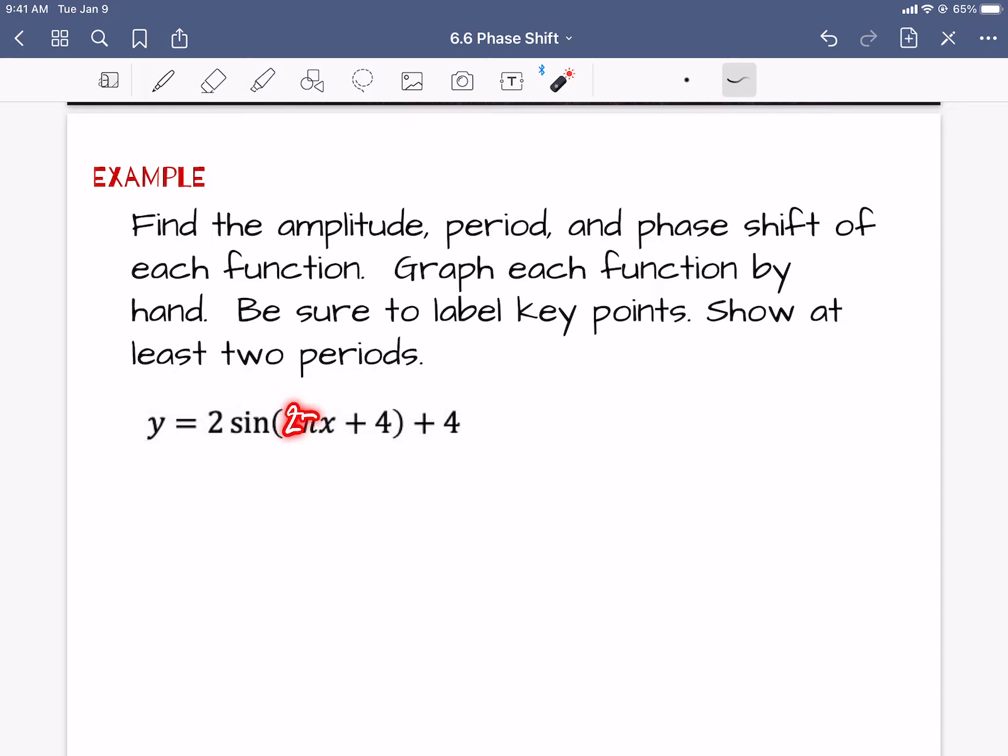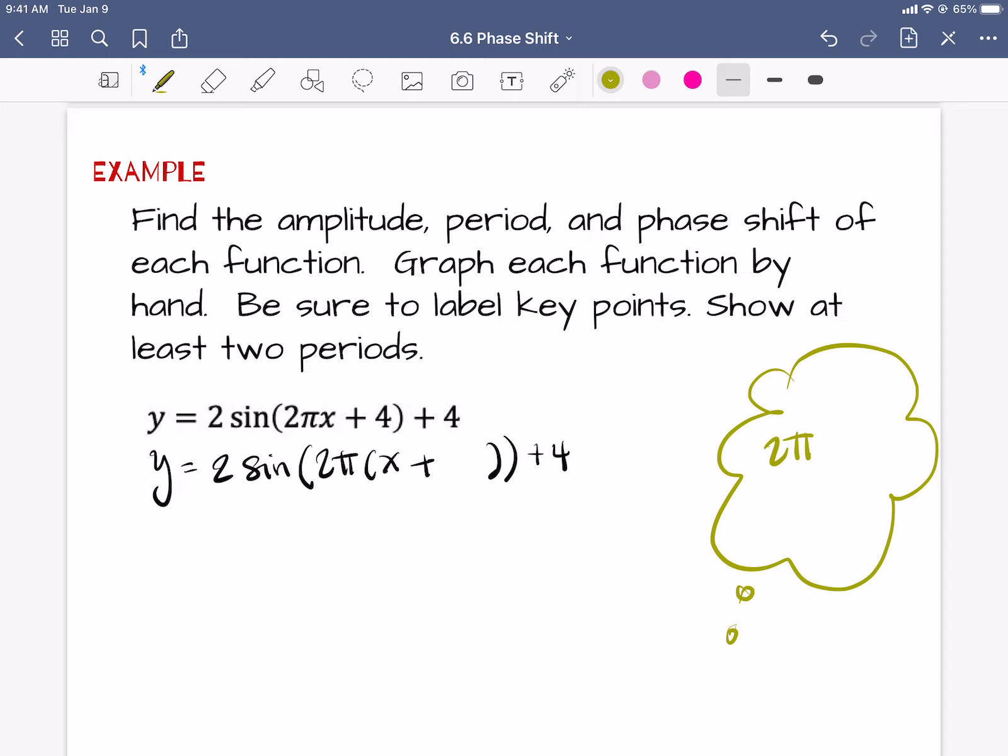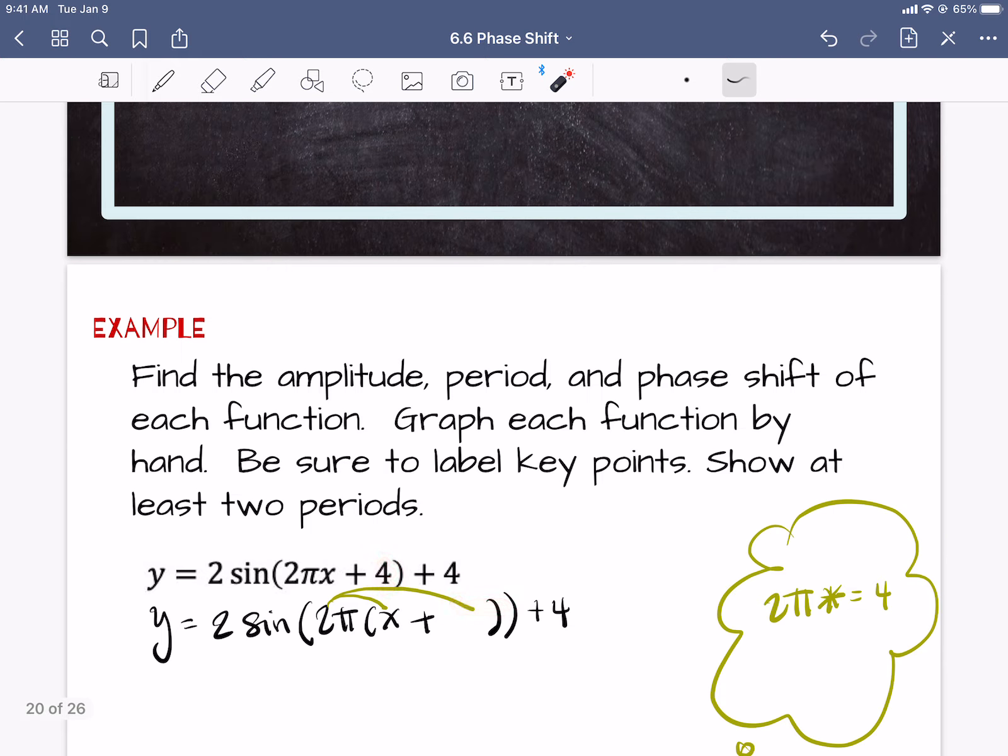Alright, so let's do that, let's factor that guy out. He's a little weird because he's got a pi in him. So I want to ask myself, I can make a little thought bubble and say, what would I have to multiply 2π by to get 4 back? I want him to distribute back through the parentheses and I'm looking for what would he need to be multiplied by to get 4 back.